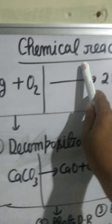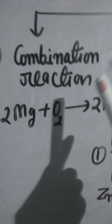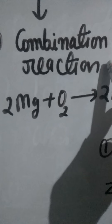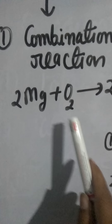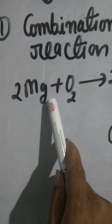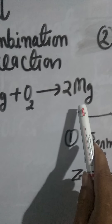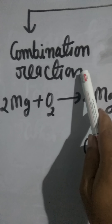Types of chemical reactions. Number one: combination reaction. Those reactions in which two or more substances combine to form a single substance are called combination reactions.